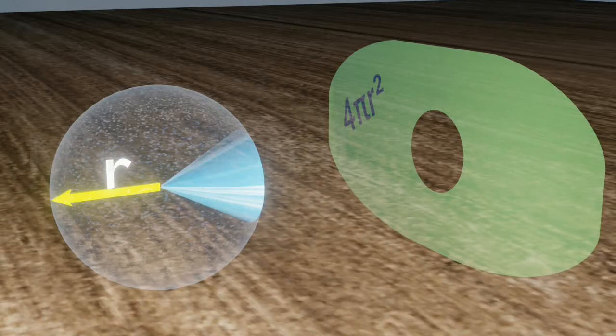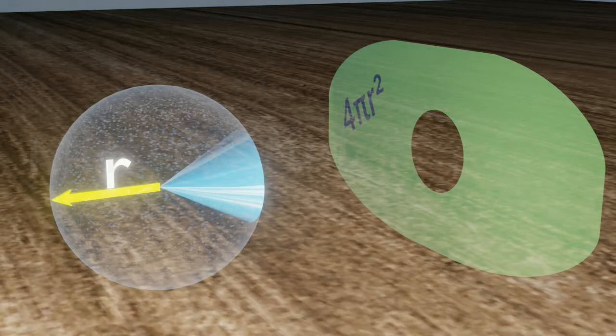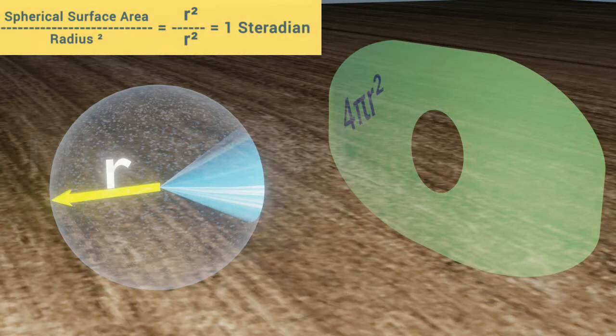Now, you can see the solid angle, which looks like a spotlight whose lamp appears to be at the center of the sphere. This solid angle is called a 1 steradian angle.